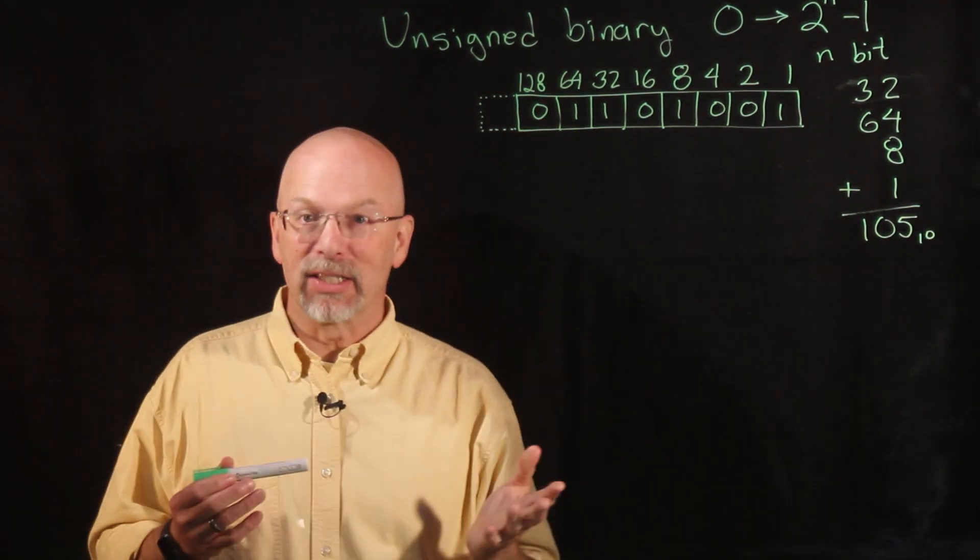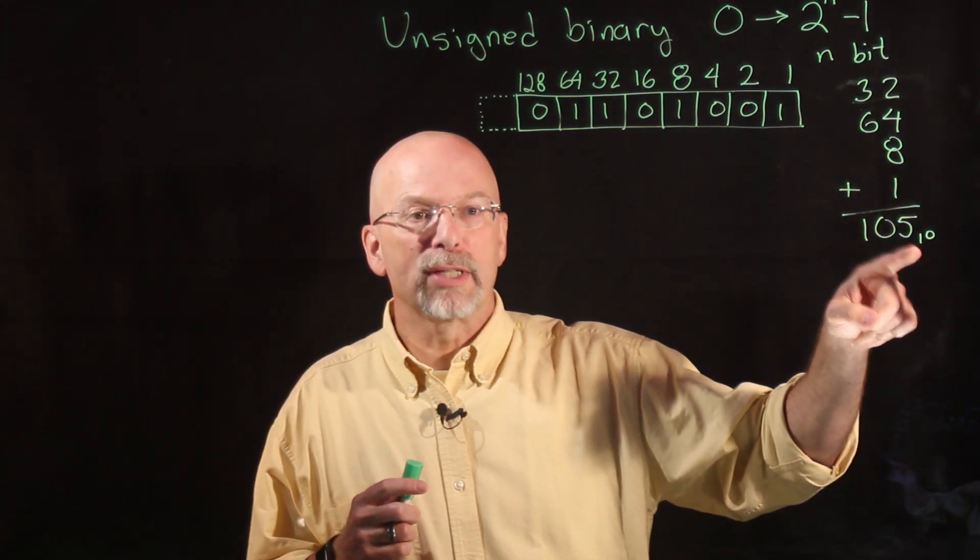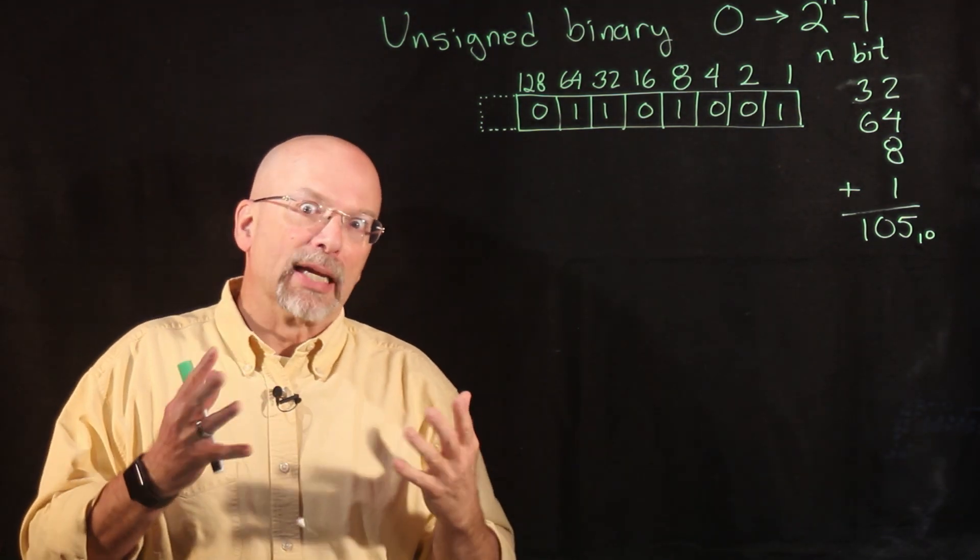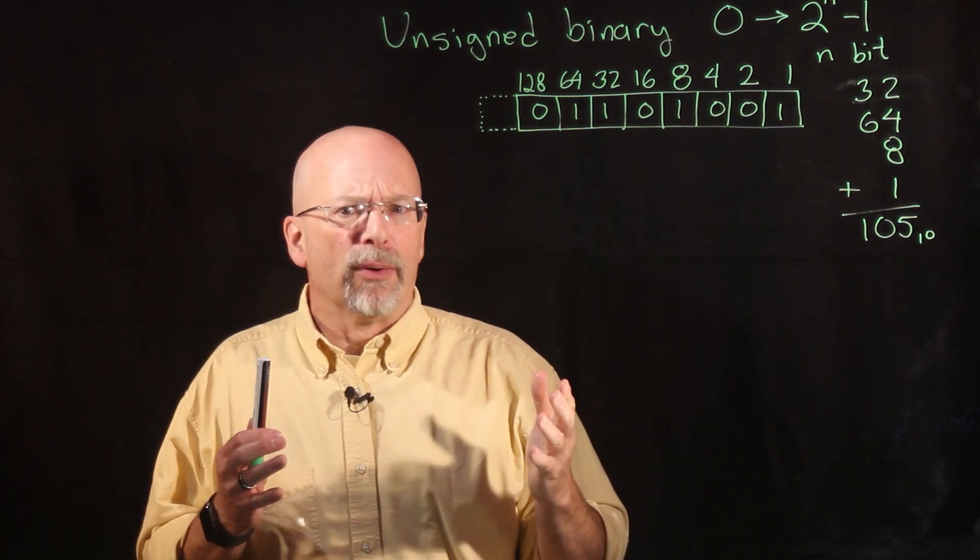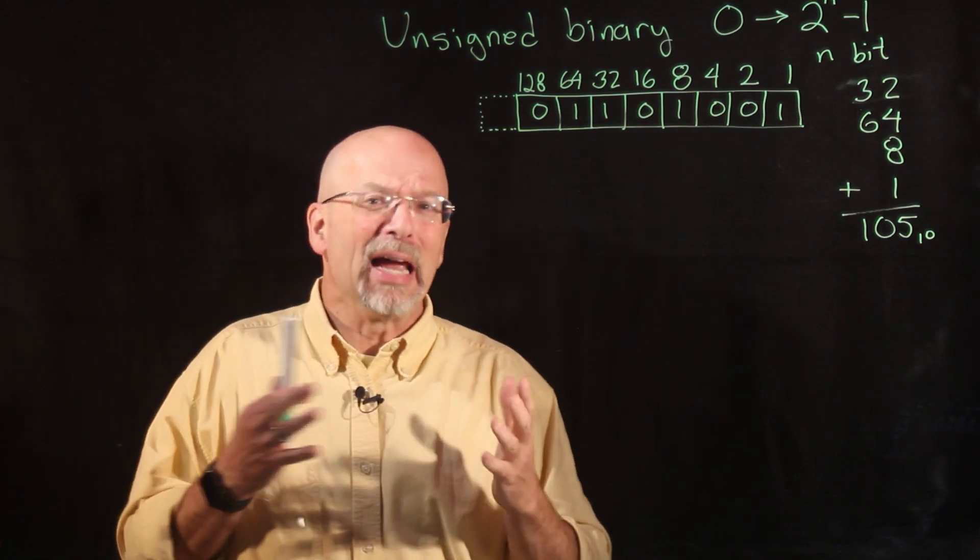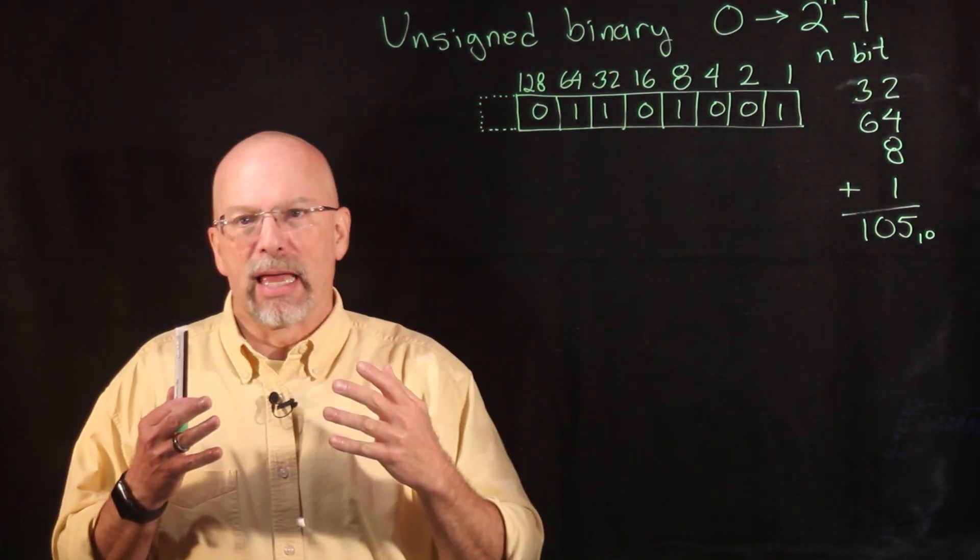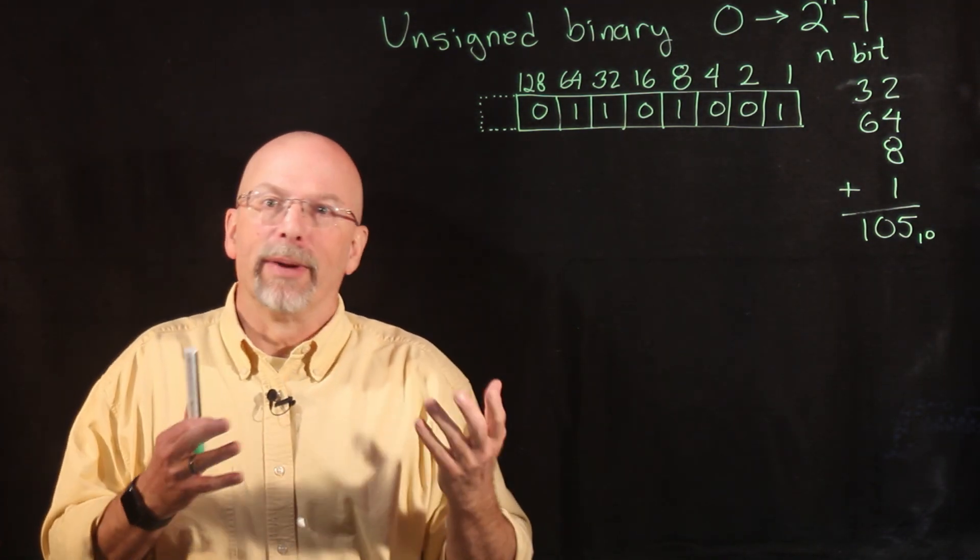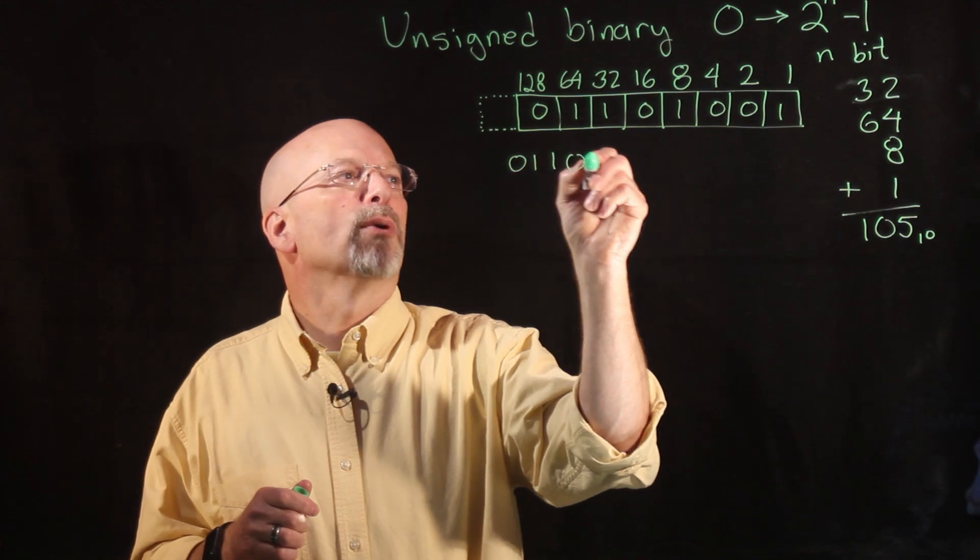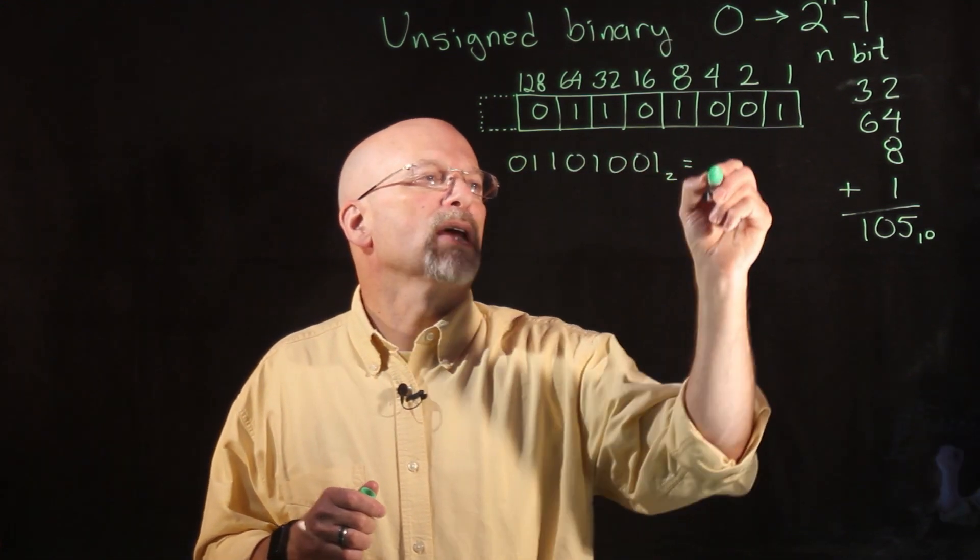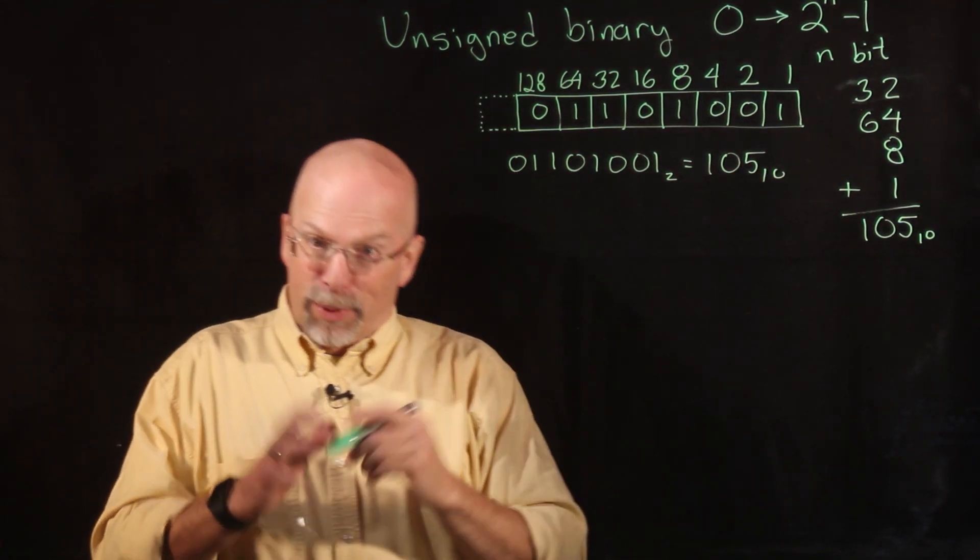Now we count in base 10, and so whenever I represent a base 10 number up here, I'm going to put this little subscript 10 there in order to indicate that we are talking base 10. For example, if I put the value 1000 up here on the board, well, is that a base 10 or is that a binary value? I need to put that subscript up there so that you understand whether we're talking about base 10 or base 2 or base 16 or base 8 or any of the other bases. So this number right here, 01101001 base 2, is equal to 105 base 10.